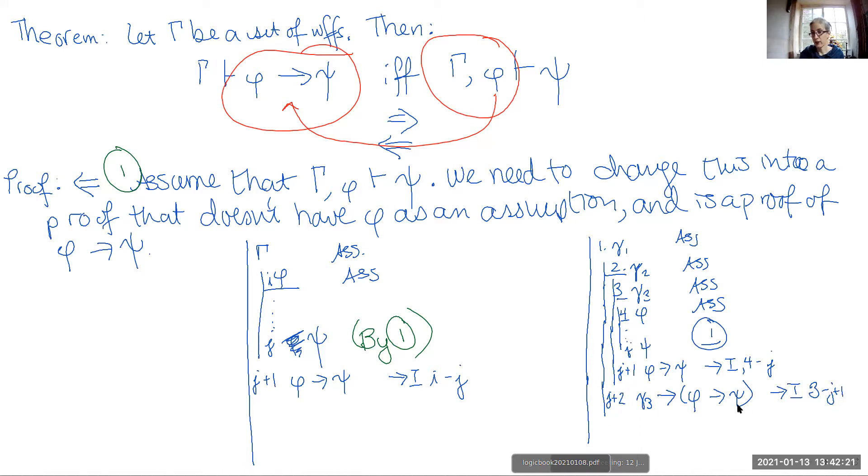Now, this line here, j plus two, relies on the assumption at line two. That's very convenient. So I can do the same trick. j plus three says that if I have gamma two, then if I have gamma three, then if I have phi, I can prove psi. So again, conditional introduction, line two to j plus two.